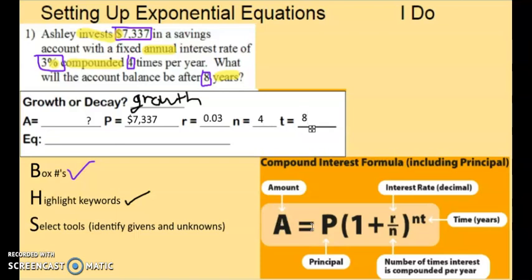And then we're going to plug these into the formula to evaluate for A, our amount after 8 years. So let's go ahead and write that out. A = 7337(1 + 0.03/4)^(4×8). Close parenthesis to the N times T power, 4 times 8.